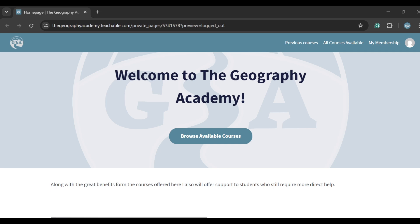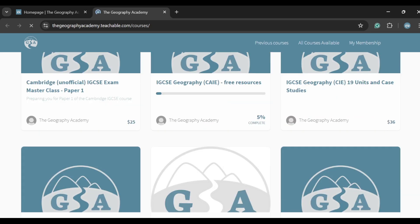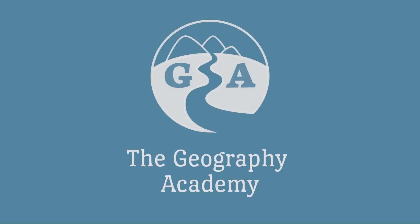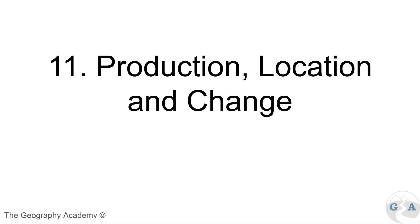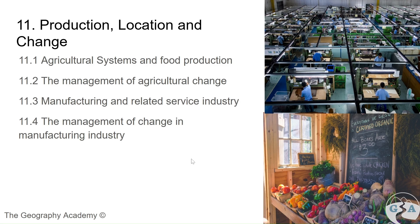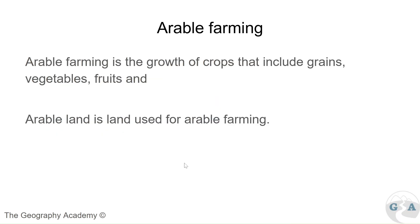Welcome back to the Geography Academy. Remember this video is just a small part of a much larger course available below if you follow the links and instructions. This is Unit 11: Production, Location and Change, divided into two main sections — one on the agricultural system and one on manufacturing — each with theory and case studies. Let's start with 11.1 on agricultural systems and food production overall.